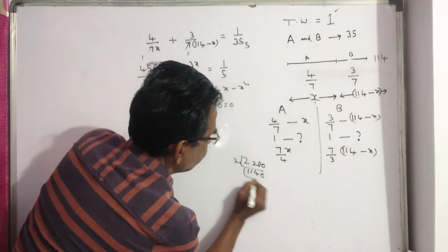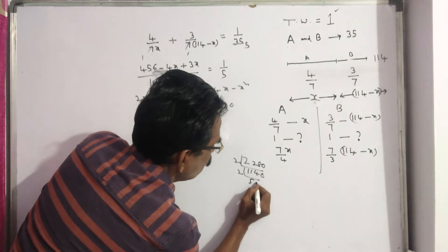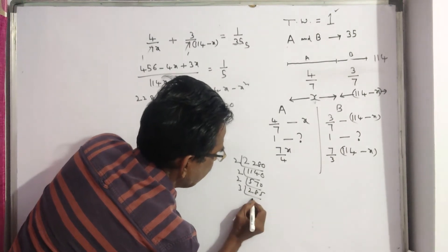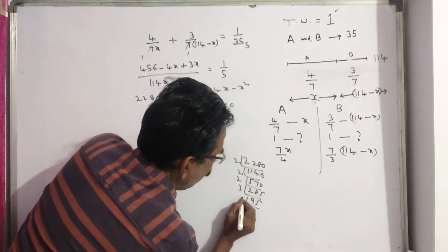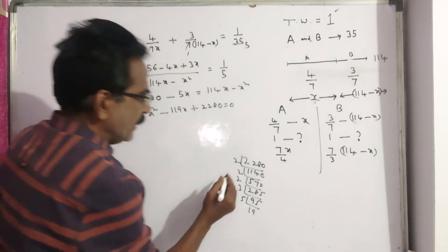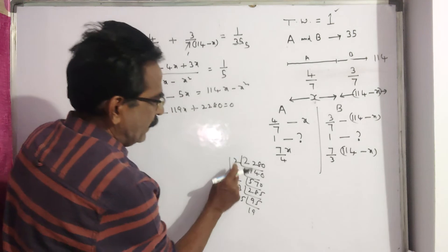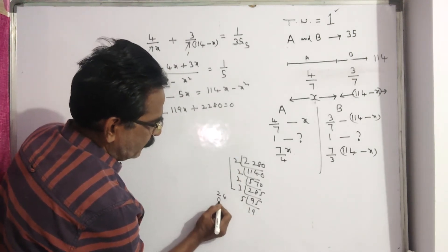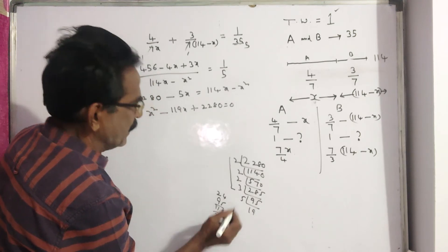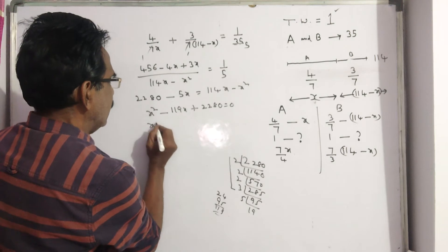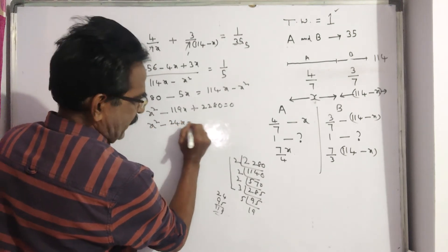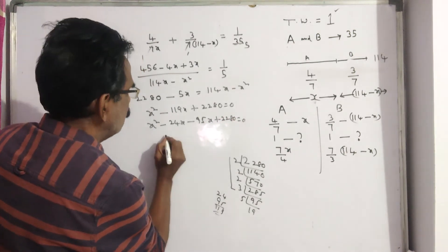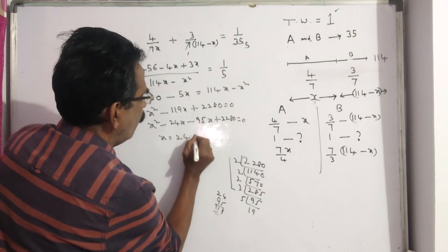2280, 2 into 2 into 2 into 3, 8 into 3, 24, 519 is 95, so 90. The roots are: x square minus 24x minus 95x plus 2280 is equal to 0, so x is equal to 24 or 95.